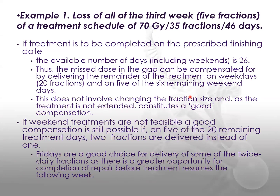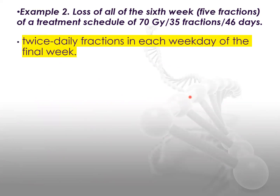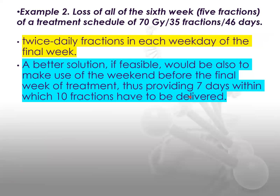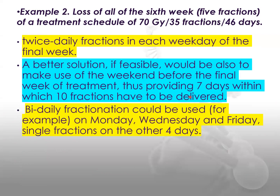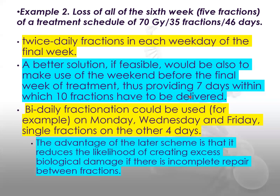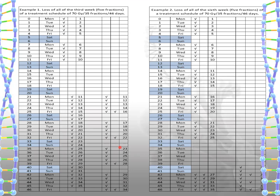Another option would be BID on every Friday. For loss of the sixth week, the option would be twice-daily fractions on each weekday of the final week. A better solution, if feasible, would also be to make use of the weekend before the final week of treatment, providing seven days within which ten fractions have to be delivered. Bi-daily fractionation could be used on Monday, Wednesday, and Friday, with a single fraction on the other four days. The advantage of the later scheme is that it reduces the likelihood of creating excess biological damage if there is incomplete repair between fractions. You can create this kind of chart on Excel or any other software to easily monitor which week was missed and what administration was done to fill the gaps.